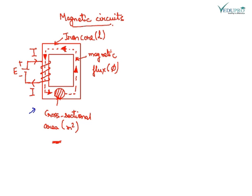This is a magnetic circuit. This is the iron core, this is the magnetic flux. The flux flows in the magnetic circuit. E is the voltage applied and N is the number of turns in the coil. This is the cross-sectional area.